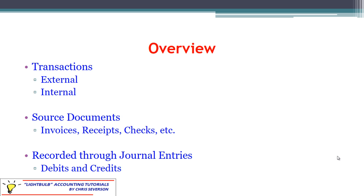We have external versus internal transactions. This section we are focusing mostly on the external transactions, which would be the example I just gave. An internal transaction would be when two different entities within the company itself are transacting — for example, Department A going to use some supplies from the storeroom. Those are more adjusting entries that we will see in later sections.